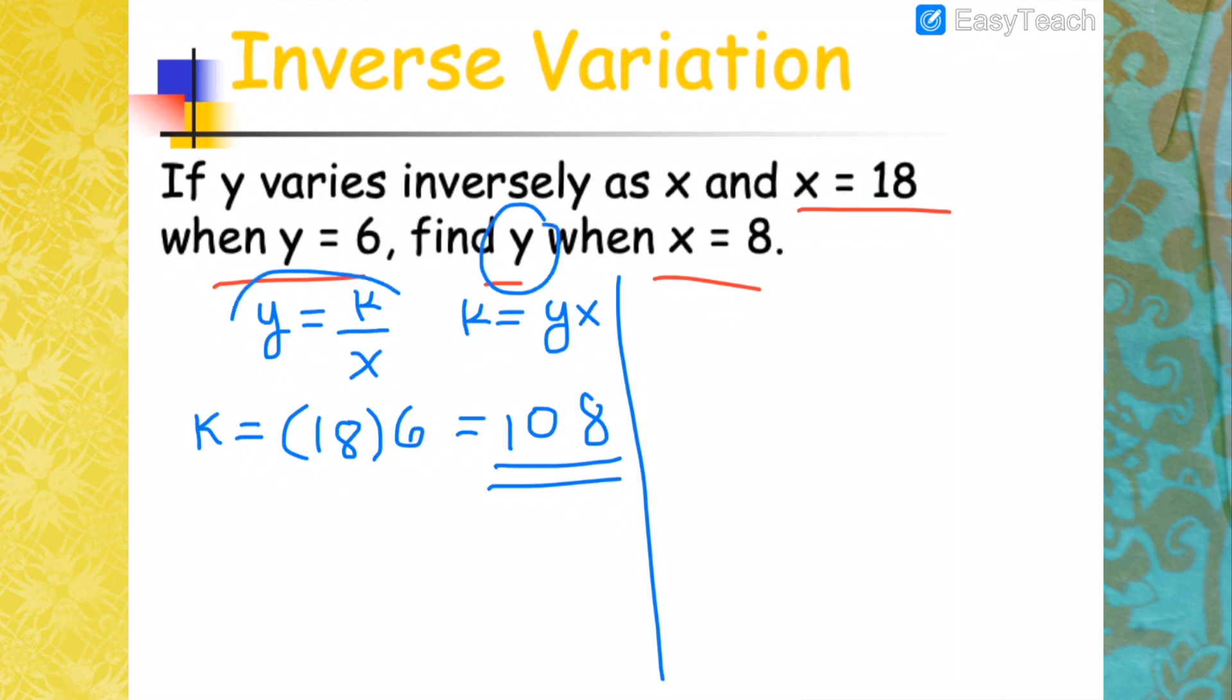Find Y, so you go back to the original form. Y equals K is 108, divided by when X is 8. 108 divided by 8 will be 13.5.